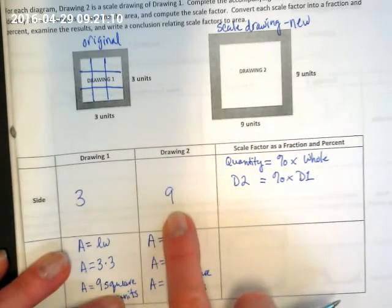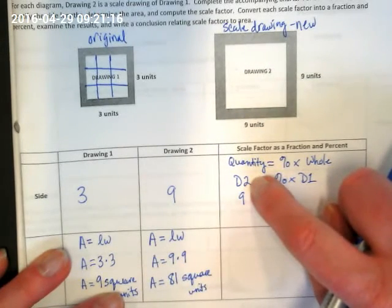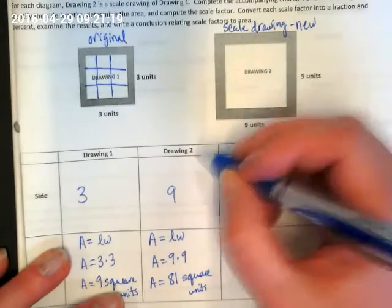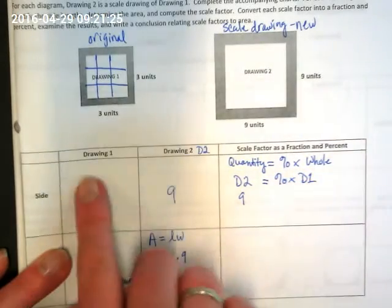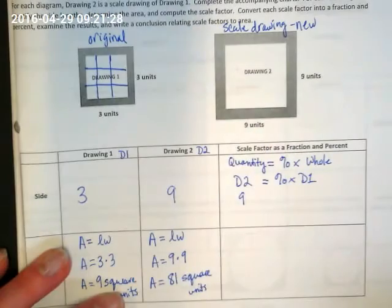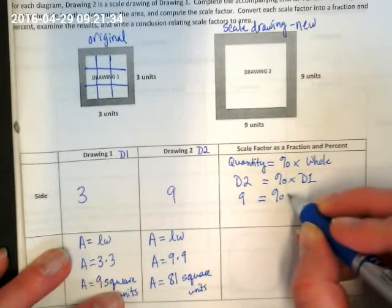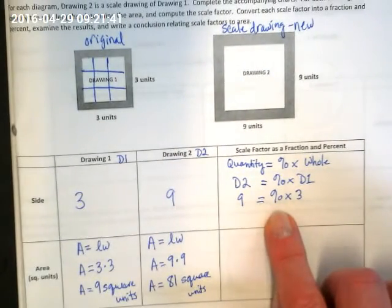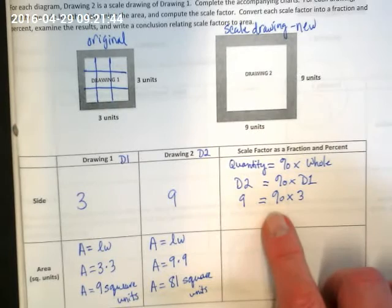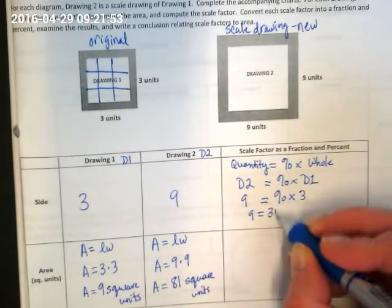Or Drawing 2 is equal to the percent times Drawing 1. What is the side in Drawing 2? Nine. That means it goes here because it's for Drawing 2. Do you guys get my note taking there? I'm just calling Drawing 2 just D2. And in my formula here, I'm calling Drawing 1 D1. This is equal to the percent times 3. I don't know what the percent is. I'm going to rewrite this right now. What variable could I use for percent? P. So this could be rewritten as 9 is equal to 3 times the percent.